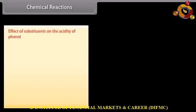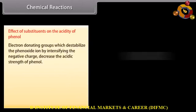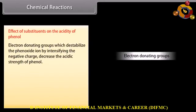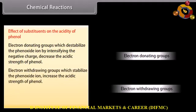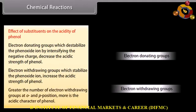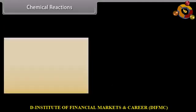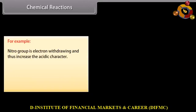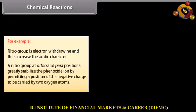Effect of substituents on the acidity of phenol: electron-donating groups, which destabilize the phenoxide ion by intensifying the negative charge, decrease the acidic strength of phenol. Electron-withdrawing groups, which stabilize the phenoxide ion, increase the acidic strength of phenol. Greater the number of electron-withdrawing groups at ortho and para positions, more is the acidic character. For example, the nitro group is electron-withdrawing and increases the acidic character, greatly stabilizing the phenoxide ion by permitting the negative charge to be carried by 2 oxygen atoms.